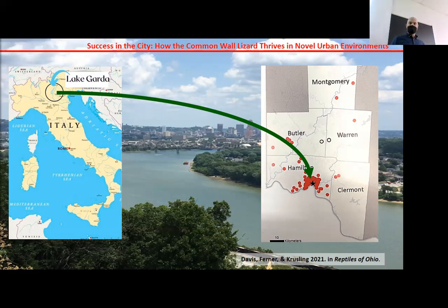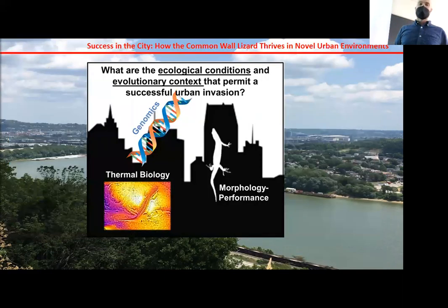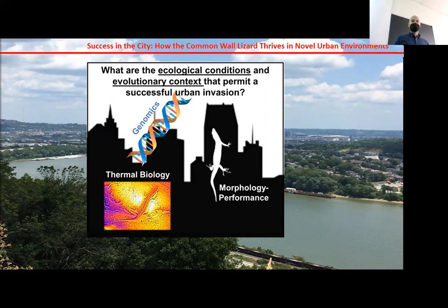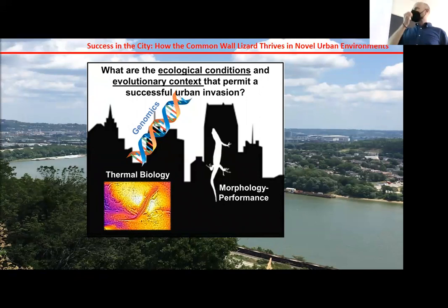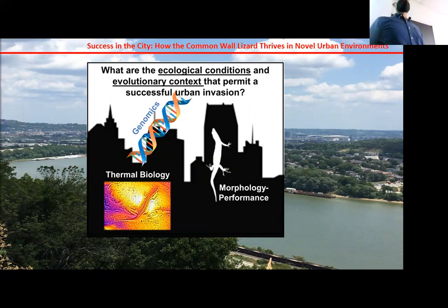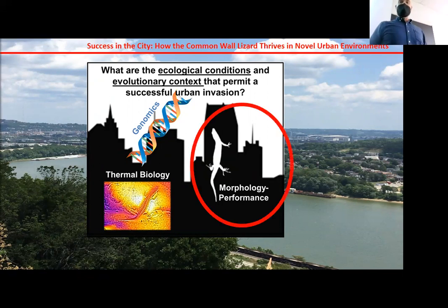The primary work of my lab at Ohio Wesleyan is to explore the ecological and evolutionary context of this invasion. Specifically, we're taking a three-pronged approach in addressing the question: what are the ecological conditions and the evolutionary context that permit this successful invasion in an urban environment? To do that, we're looking at the relationship between morphology and performance, we're looking at thermobiology, and we're using genomic approaches to understand the underlying genetic mechanisms and constraints of this system.